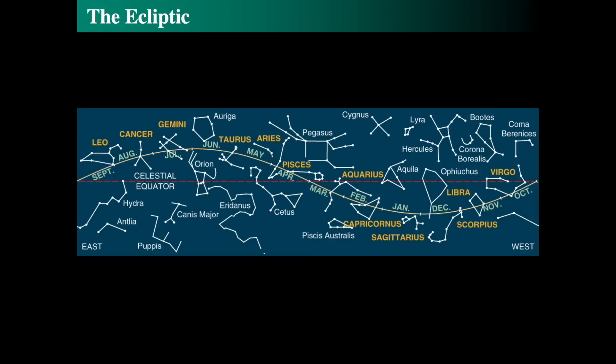The sun traces a path around the sky. The red dashed line is the celestial equator which is the projection of the earth's equator out into space. The zodiac are the constellations through which the sun passes on its path around the ecliptic.